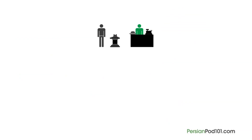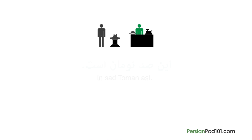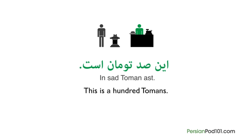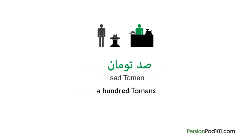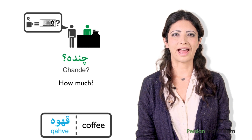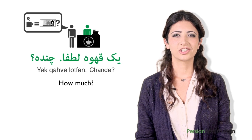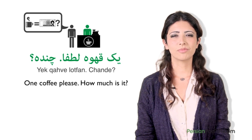At this point, the shop clerk can answer by saying the price. The currency in Iran is Toman. For example: 'In sad toman ast' — this is a hundred tomans. Or they will simply answer 'Sad toman.' A quicker way to ask how much is 'chande.' So when you ask for a coffee — kahve — at a cafe, you can ask: 'Yek kahve lotfan? Chande?' meaning one coffee please, how much is it?